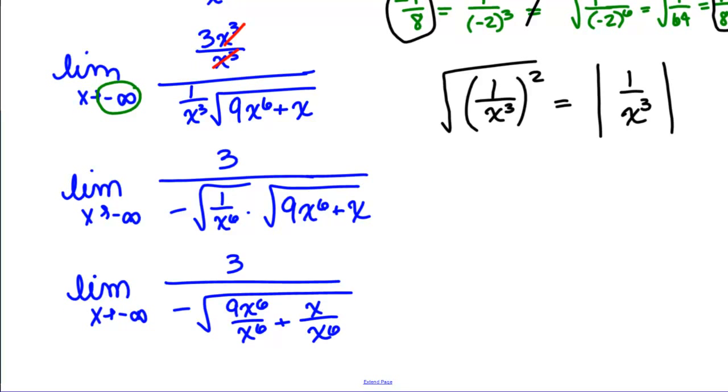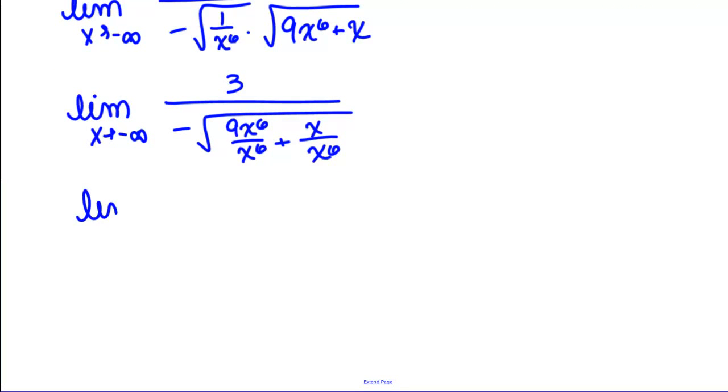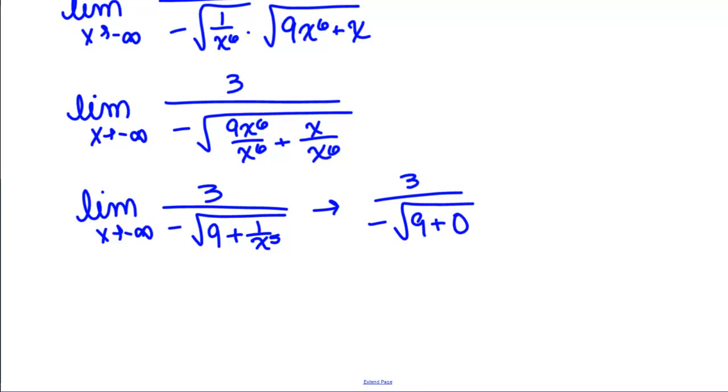This gives us the limit as X goes to negative infinity of 3 over negative the square root of 9 plus 1 over X to the 5th, which has the form 3 over negative the square root of 9 plus 0, because we're going to have 1 over infinity, which goes to 0. And so that means that our answer is 3 over negative the square root of 9, which is 3 over negative 3, which is negative 1.